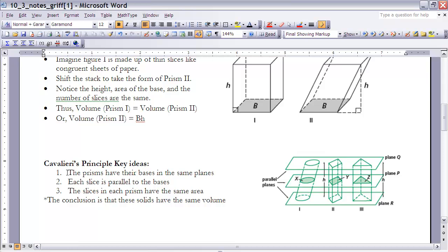The conclusion is that these solids have the same volume. So basically what Cavalieri's Principle is telling us is that if we have any sort of prisms or cylinders that have the same height and the same base area, no matter what the shape is, they will have the same volume. And it really just reiterates the point that the volume of any prism or cylinder is the area of its base times its height.